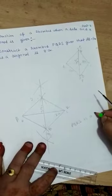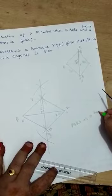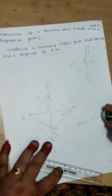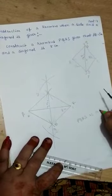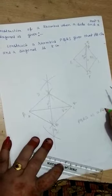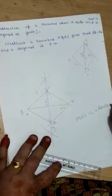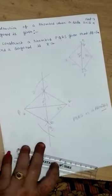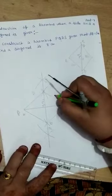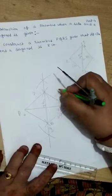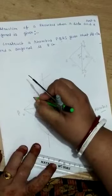PQRS is a rhombus. You know, length of the side of rhombus is equal. This is 5 cm.